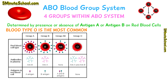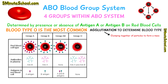Blood type O is the most common blood type in the world. The way to determine your blood type is with an experiment called agglutination. Agglutination means the collection of several particles joining together in a mass. When we add a specific antigen to its corresponding antibody, they will clump together and form a mass in the process called agglutination.